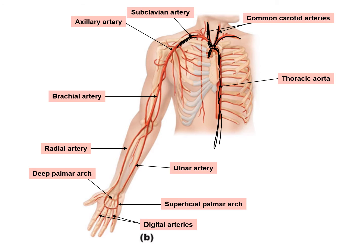As we move down the arm, the name of the blood vessel changes. When it approaches the axillary region, we call it the axillary artery. Moving further down, we call it the brachial artery. When the brachial artery reaches the antecubital area, it splits into the radial artery and the ulnar artery — radial is lateral and ulnar is medial. When they reach the palm, they form the palmar arch. We have both a deep palmar arch and a superficial palmar arch, and branching from those arches are the digital arteries.